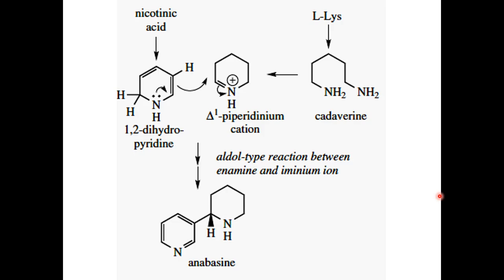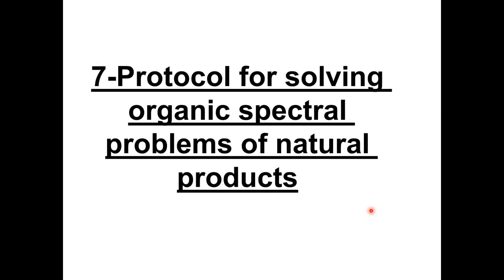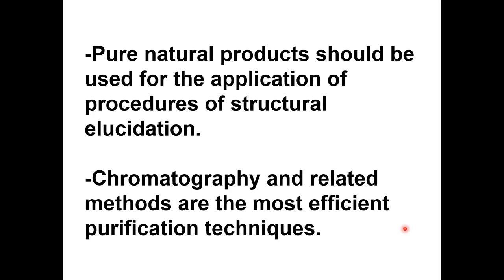This describes the basic information students should know about the biosynthesis of natural products. To obtain spectral data of any organic compound, one should have a pure compound prepared by chromatography. After isolation, we measure physical constants including melting point, optical rotation, and refractive index in the case of liquids.